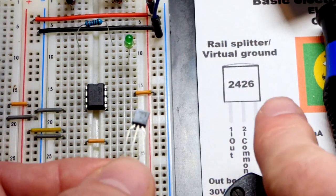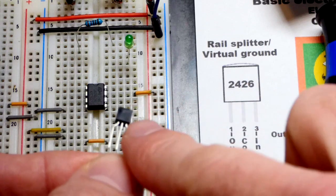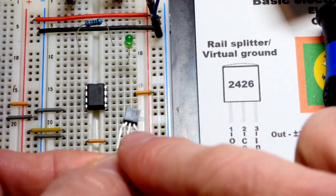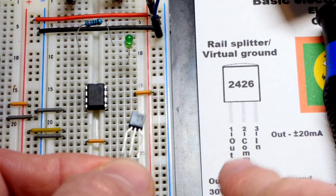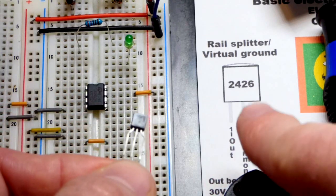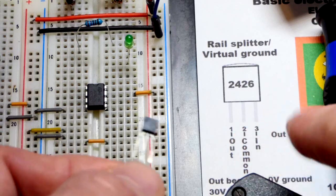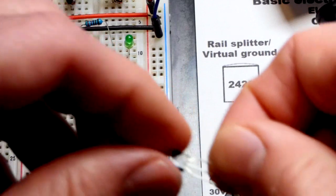So here is the pin layout. We're looking at the flat side. It looks like a TO92 package, but it may be slightly different. I'm not sure. And in any case, left pin is out. And so that's our virtual ground once we wire this up. Pin two is common. So we put that to the negative rail. And then pin three we put to the positive rail.